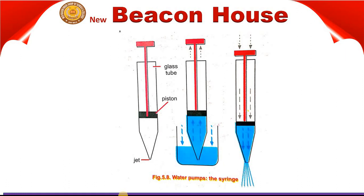The liquid in the syringe does not flow out even after the jet has been removed from the liquid. However, it can be drawn out through the jet by pressing down on the piston.